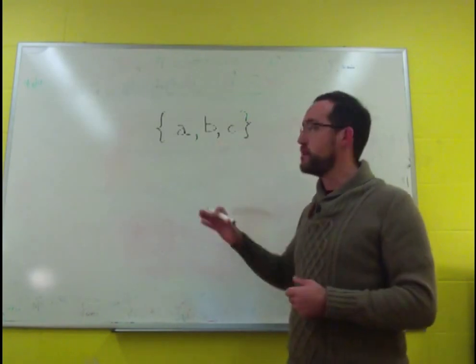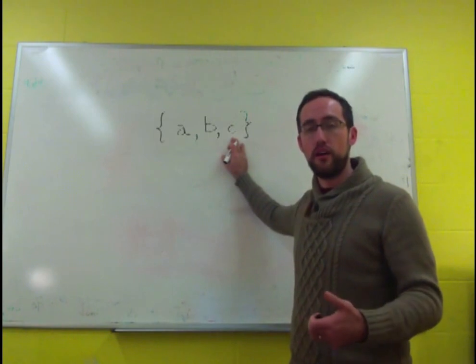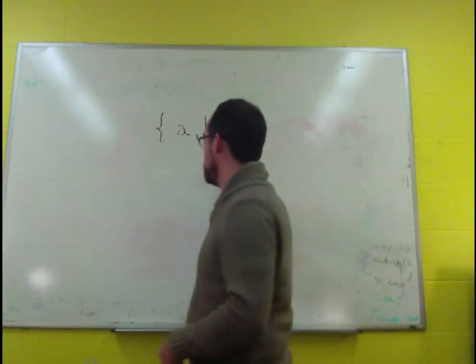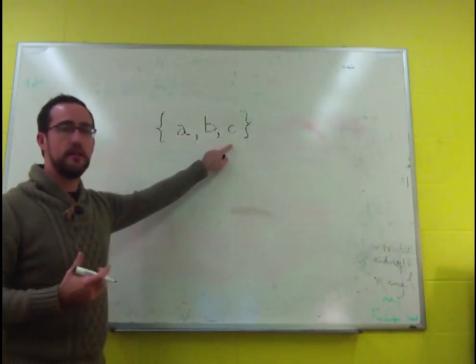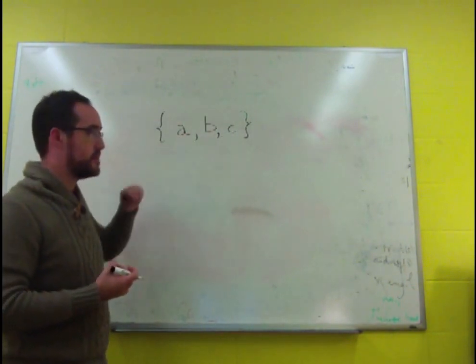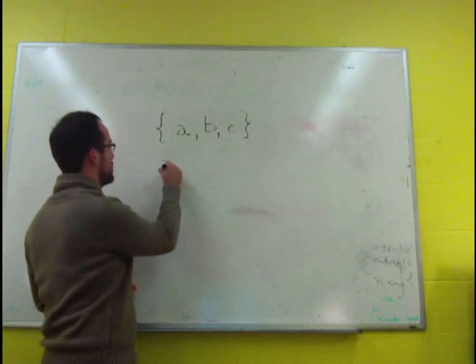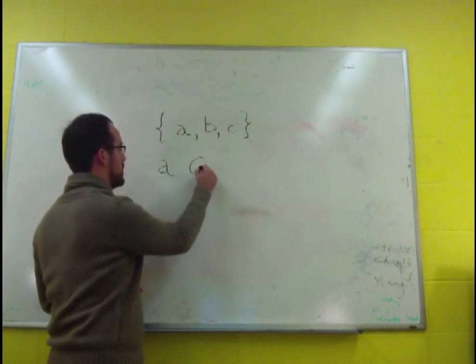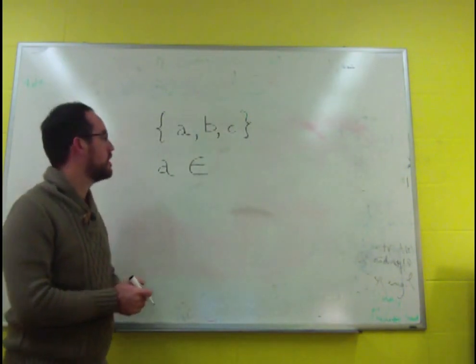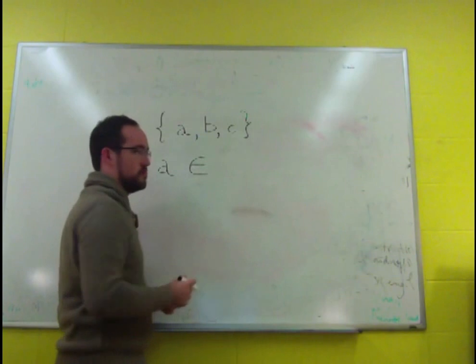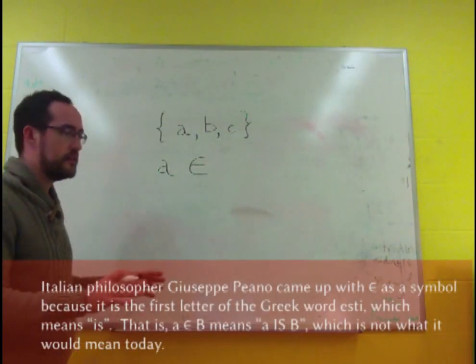Each of the objects that are listed here is a member or an element of the set. And if we want to talk about these objects being elements of this set or members of this set, then there's a symbol for that too. And it looks like this weird sort of E. It's actually a Greek epsilon. And there's an etymological reason for that that doesn't concern us.